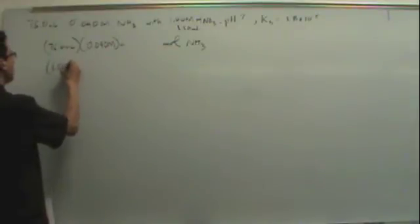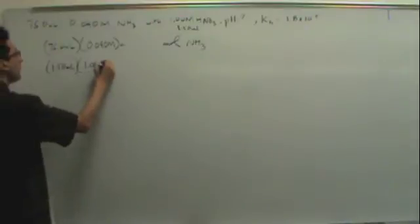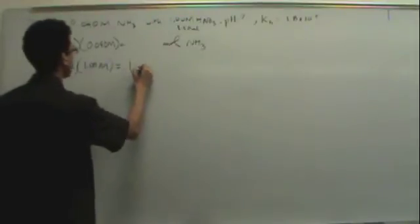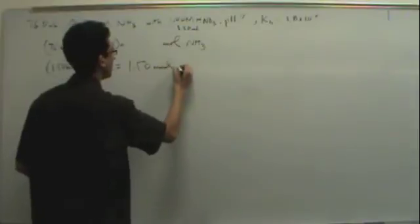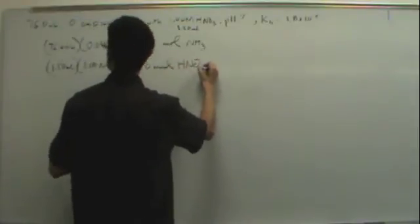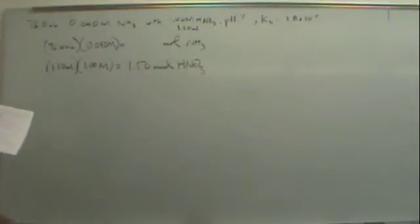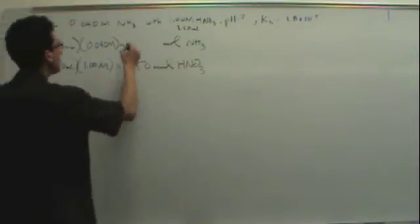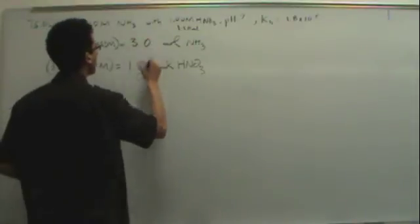It's going to be 1.50 milliliters times 1.00 molar. This is just 1.50 millimoles of HNO3. The top one, 75 times 0.04—what is that? Let's see. 3. Okay.